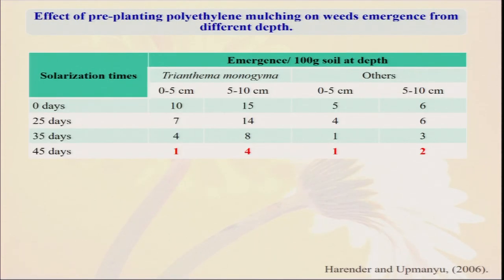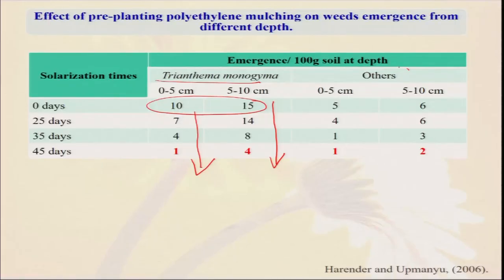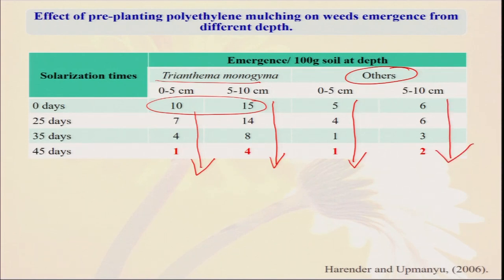Different types of soil solarization experiments have been done all over the world. If we see the emergence of weeds like Trianthema in the surface soil — at 0 days the weed population is very high. The more we go for soil solarization by covering with a transparent plastic sheet — not the black plastic sheet — the weed population decreases. This is the same for other weeds, not only particular weeds. The seed population and weed emergence are decreasing everywhere.